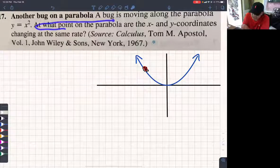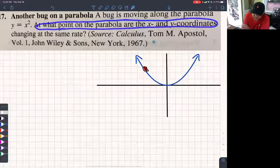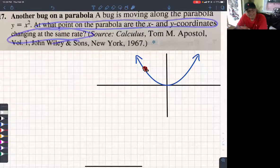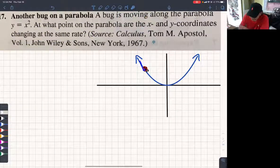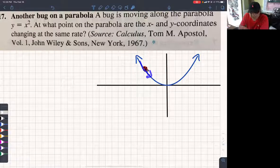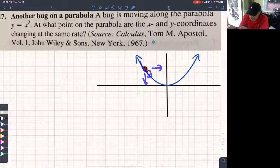At what point on the parabola are the x and y coordinates changing at the same rate? So as you can see, as this bug moves, he's moving horizontally and vertically.